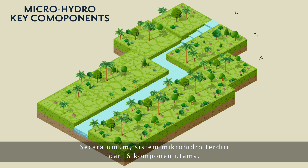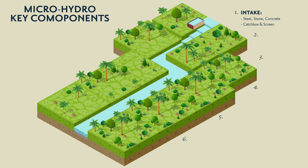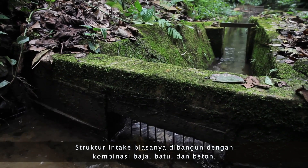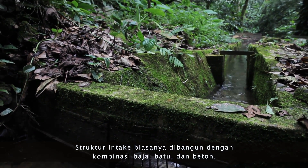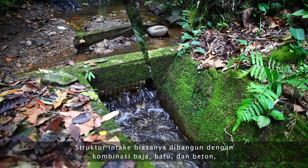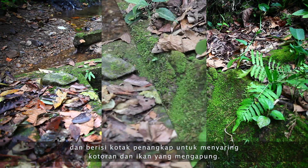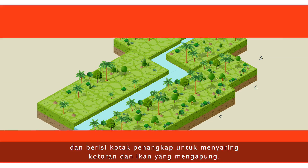In general, microhydro schemes are made up of six key components. The intake is where water is diverted into a dammed pool from a stream, river, or waterfall. The intake structure is normally constructed from a combination of steel, stone, and concrete, and contains a catch box with a screen to filter out floating debris and fish.